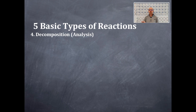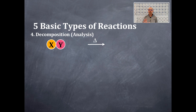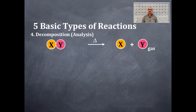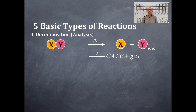Number four reaction type is a decomposition or an analysis type of reaction. The decomposition reaction is the easiest type to figure out because it's the only one of the five types that has only one reactant. You always need heat input to make this reaction proceed forward, which is why there's a delta above the arrow. You have at least two products, and typically one of them is going to be a gas — either oxygen gas, carbon dioxide gas, or sulfur dioxide gas.